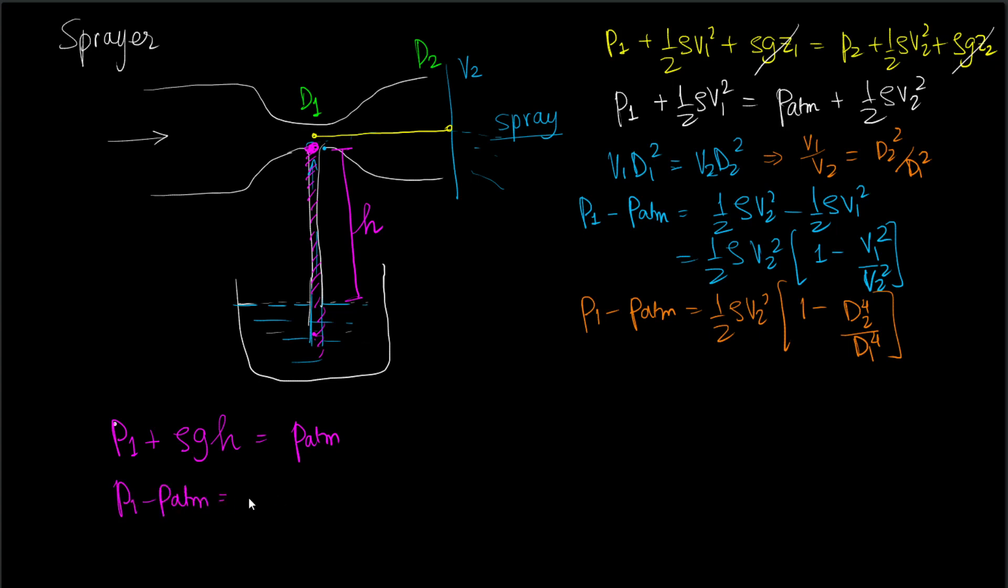Therefore p1 - p_atm = -ρgh. Therefore -ρgh = 1/2ρv2²(1 - d2⁴/d1⁴). ρ cancels out from both sides, therefore we have 2gh/(d2⁴/d1⁴ - 1).